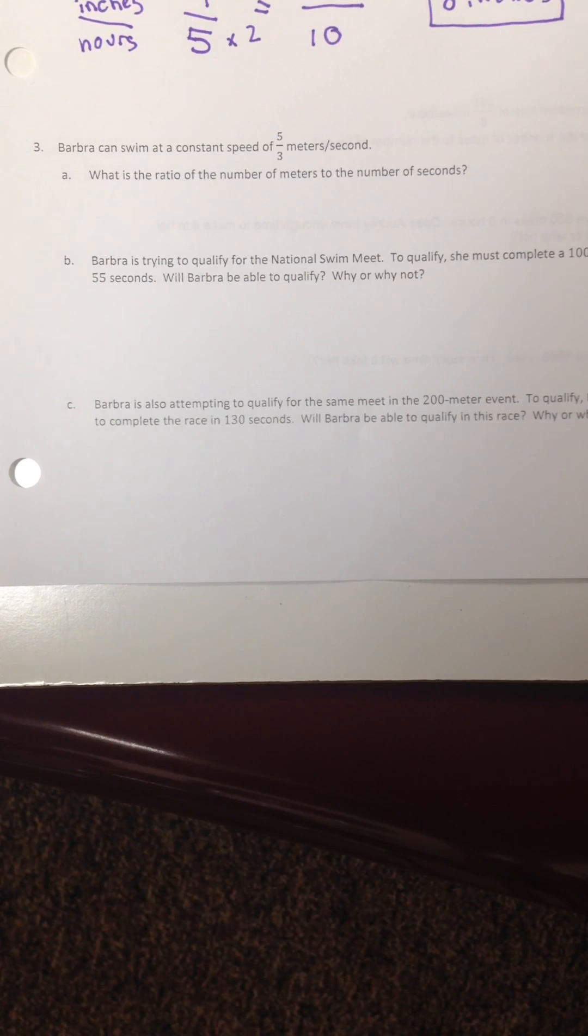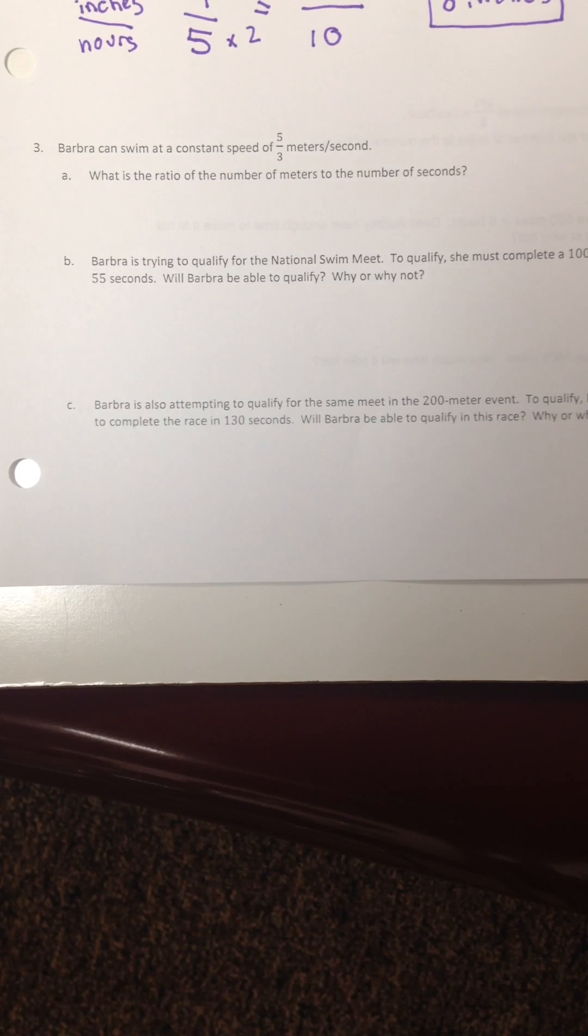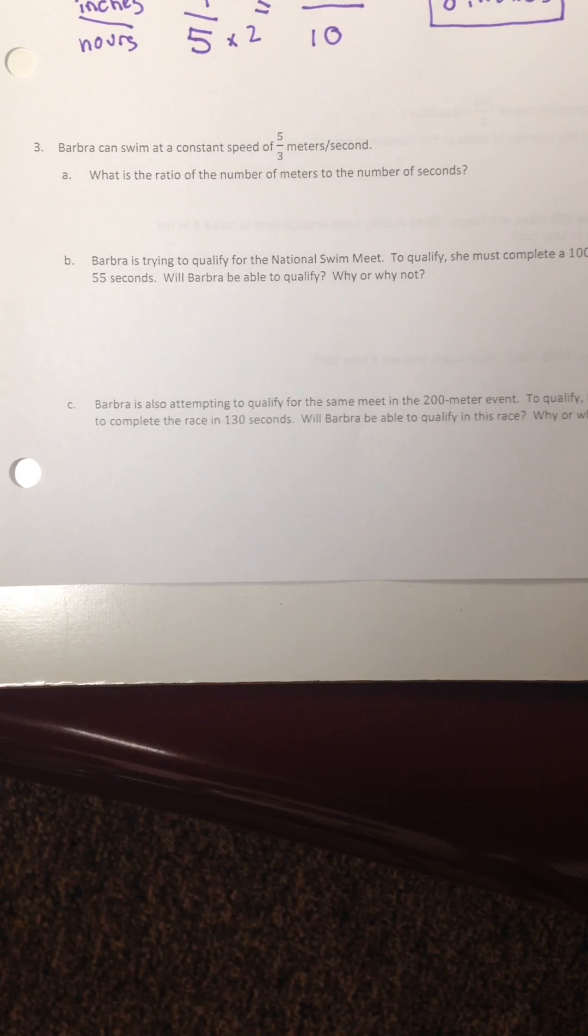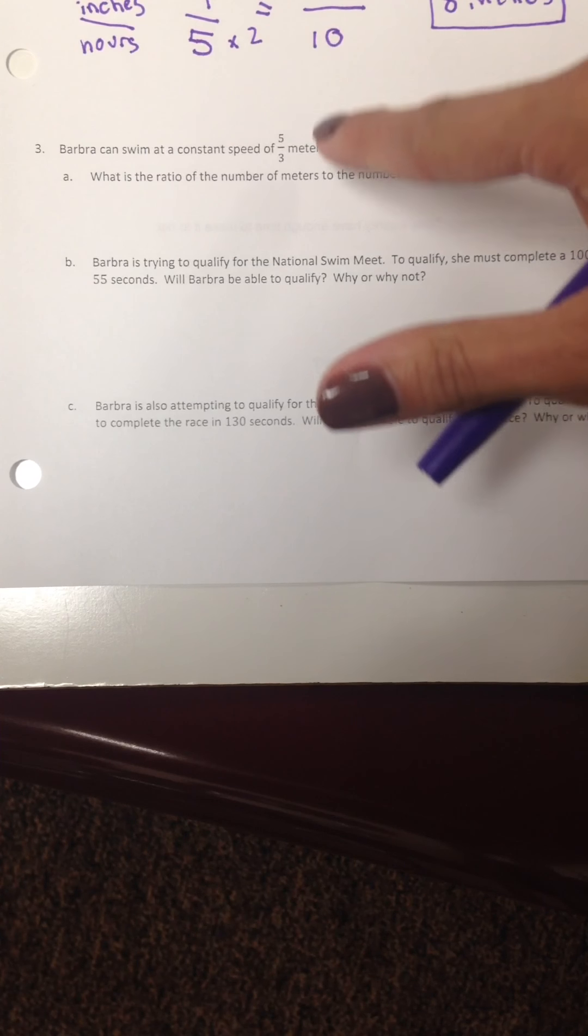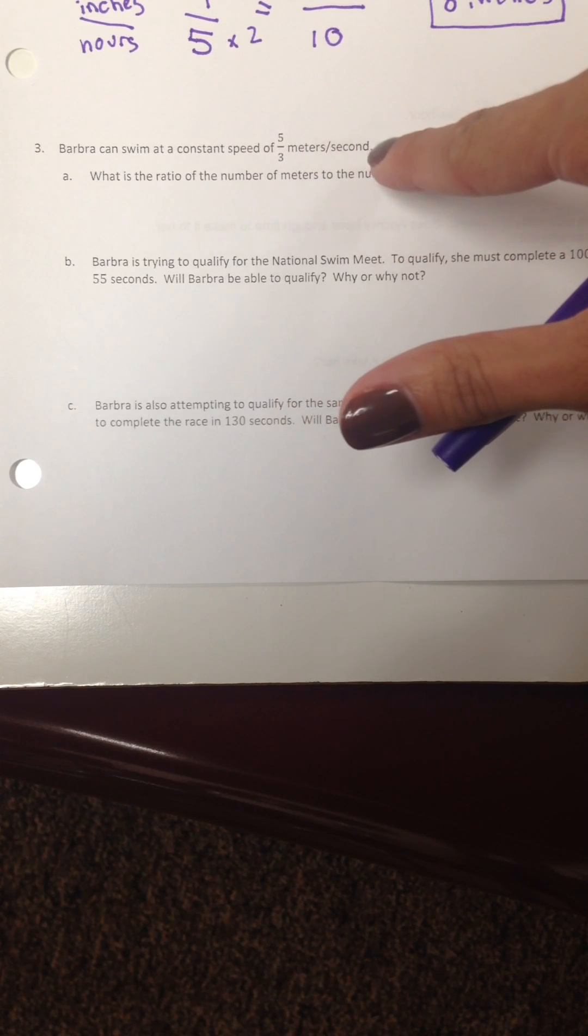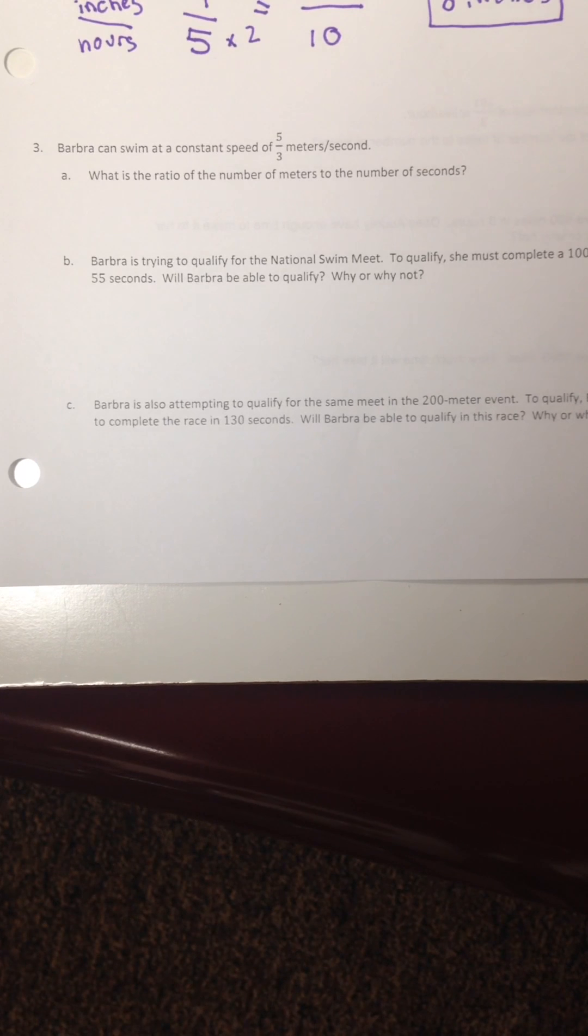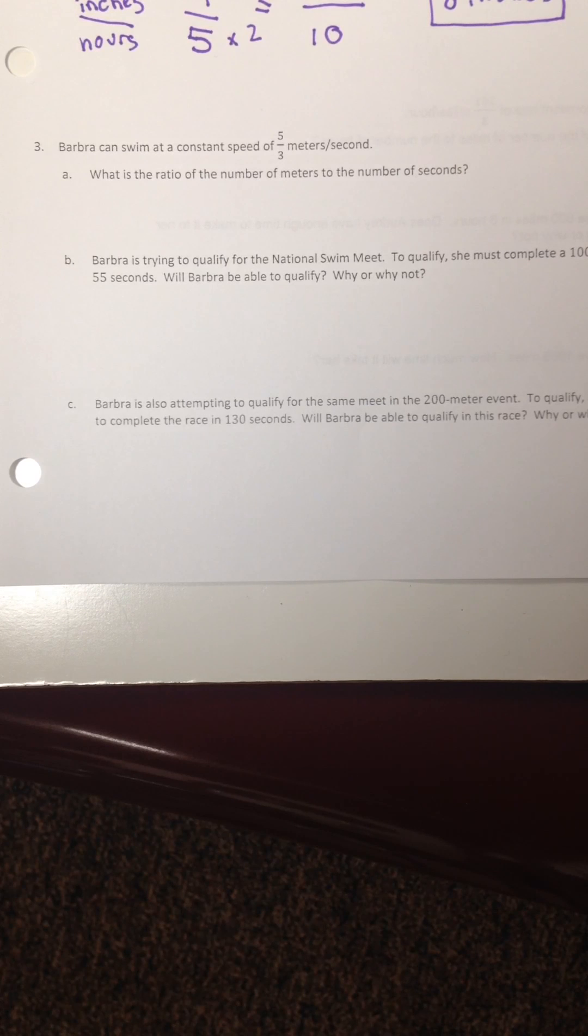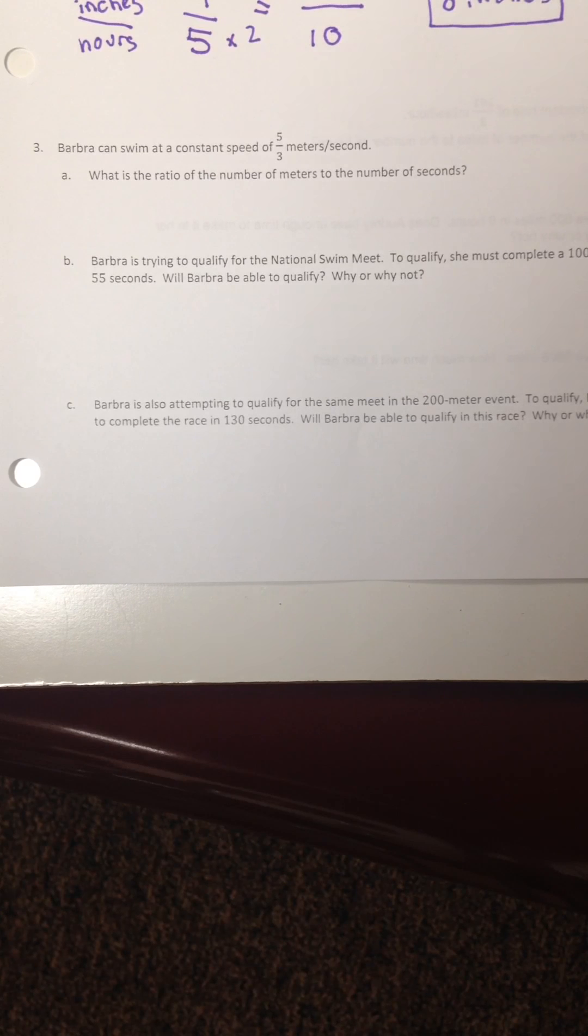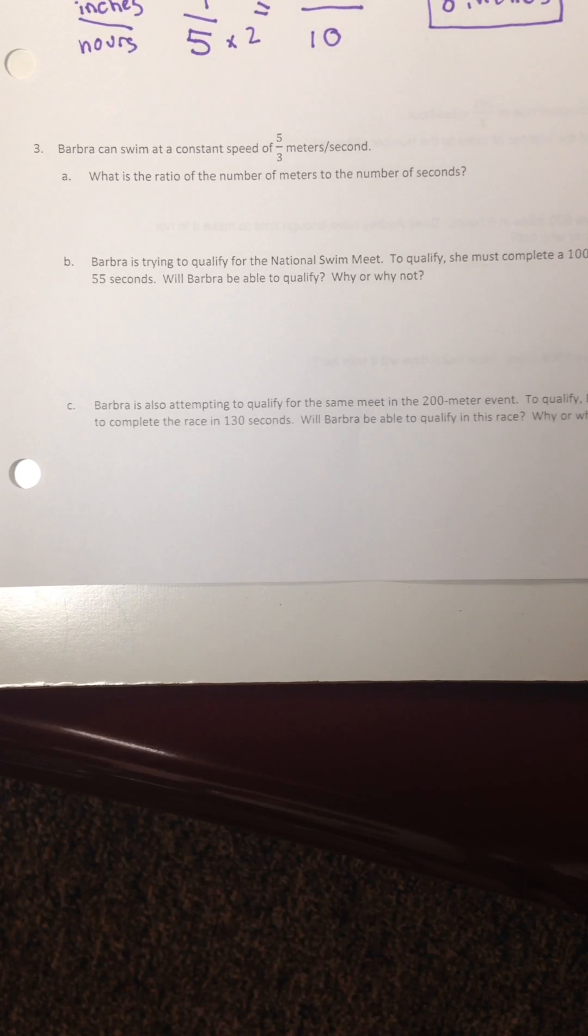Barbara can swim at a constant speed of 5 over 3 meters per second. So remember, 5 was referring to meters, 3 was referring to seconds. Sometimes when you're taking the M-step, they're going to be set up this way. And they don't mean 5 thirds of a meter for every second. It means 5 meters every 3 seconds.